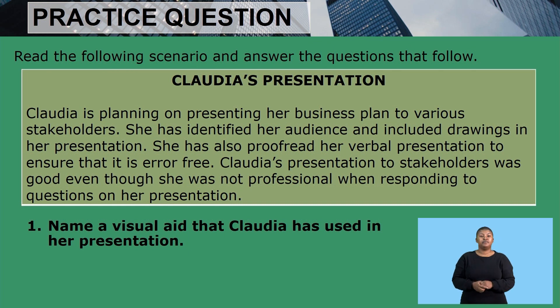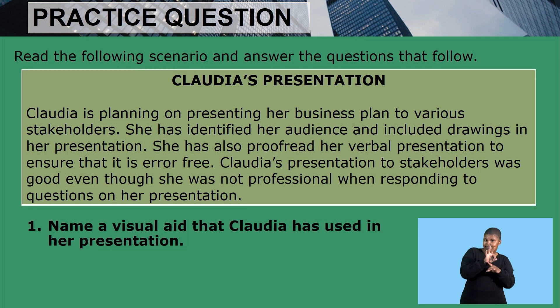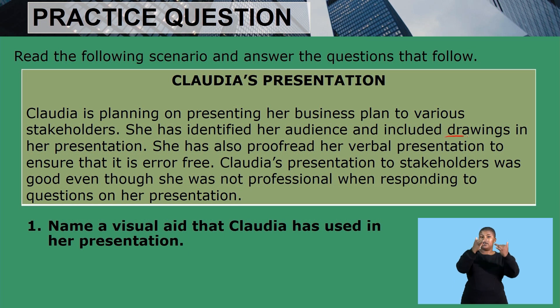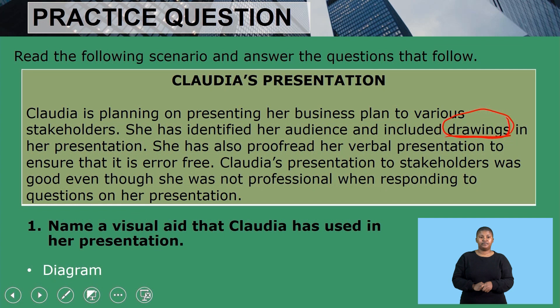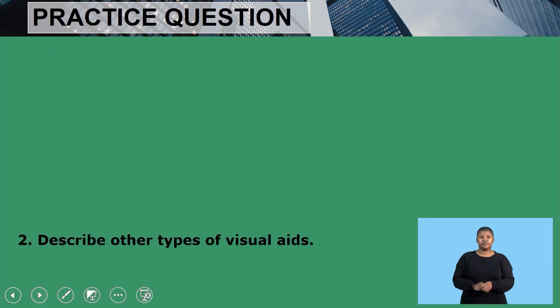Let's go back to the presentation. Claudia is planning on presenting her business plan to various stakeholders. We are looking for a visual aid that she has used. She has identified her audience and included drawings in her presentation. So 'drawings' is a visual aid — I'm sure you are thinking it falls under a diagram. So this would be classified as a diagram.